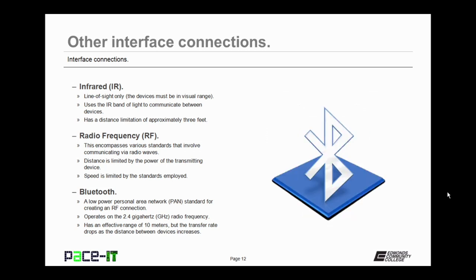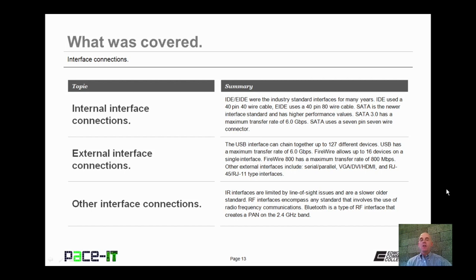Then we have Bluetooth — a low-powered personal area network, or PAN, standard for creating a radio frequency connection. It operates on the 2.4 GHz radio frequency, has an effective range of 10 meters, but the transfer rate drops as the distance between devices increases. That concludes this session on interface connections. We talked about internal interface connections, external interface connections, and other non-wired interface connections. On behalf of PACE IT, thank you for watching this session.